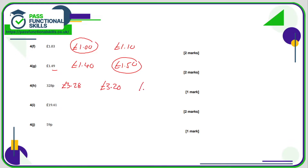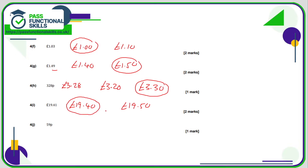328 pence — write that as £3.28; that's between £3.20 and £3.30, so to the nearest 10p that rounds to £3.30 because 28 is closer to 30 than to 20. £19.41 is between £19.40 and £19.50 and rounds down to £19.40 because 41 pence is closer to 40 than to 50. 59p is between 50p and 60p — clearly closer to 60, so we round up to 60p.